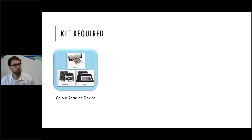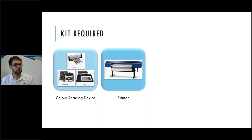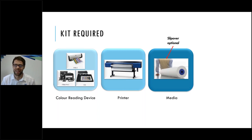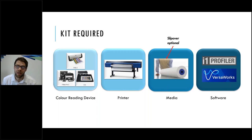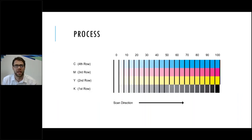It could be a worthwhile investment if you do high volume work and want to profile your own media. You also need your specific printer — while profiles downloaded from the internet for, say, an SG540 and a particular material will be pretty accurate, it's more accurate still if done on your own machine in your own environment, since colors are affected by temperature and surroundings. You also need your roll of material, VersaWorks software, and i1 profiling software that comes with X-Rite, or some other ICC profile builder.